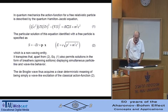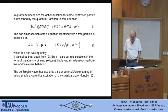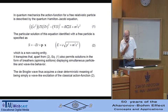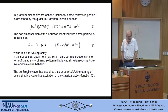In quantum mechanics, the action function for a free relativistic particle is described by the quantum Hamilton-Jacobi equation, which you see here. The particular solution of this equation identified with a free particle is specified as S equals minus ET plus PX, which is clearly a non-waving entity.